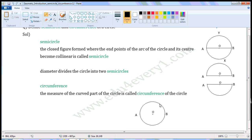In this figure, O is the center of the circle and A and B are points of the circle. The measure of the curved part, that is, from A through B to A is called circumference of the circle.